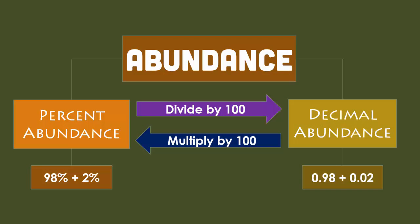Abundance can be written in two different ways: as a percent or as a decimal. If you have it as a percent, you just divide by 100 to get the decimal abundance. If you get it as a decimal abundance, you can multiply it by 100 to get the percent abundance. We're going to be using the abundance in a calculation to figure out the average atomic mass based on the natural abundance of these different isotopes.